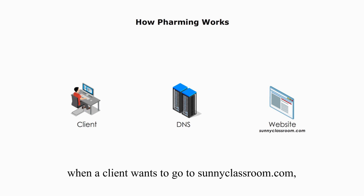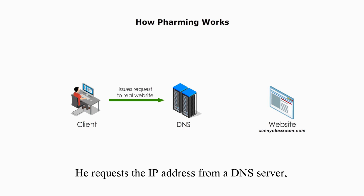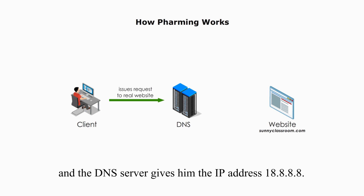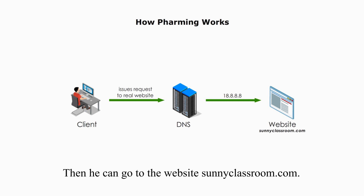For example, when a client wants to go to sunnyclassroom.com, he needs the IP address of sunnyclassroom.com. He requests the IP address from the DNS server, and the DNS server gives him the IP address 18.8.8.8. Then he can go to the website sunnyclassroom.com.